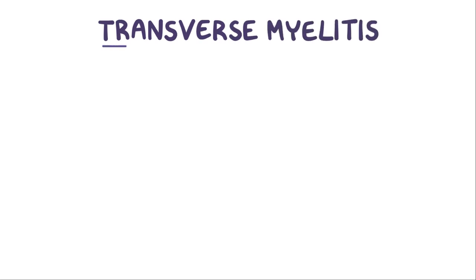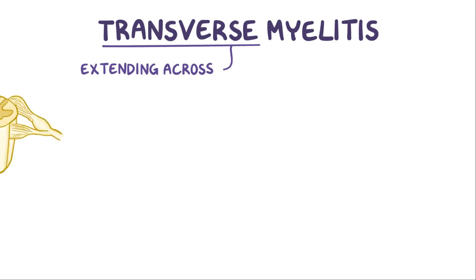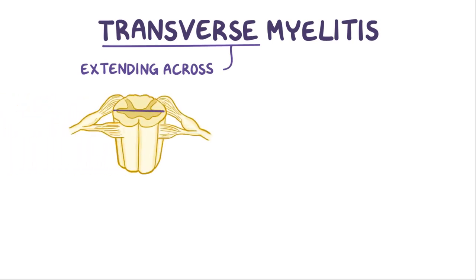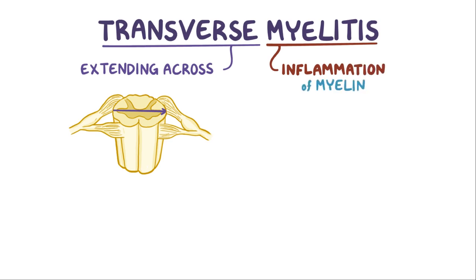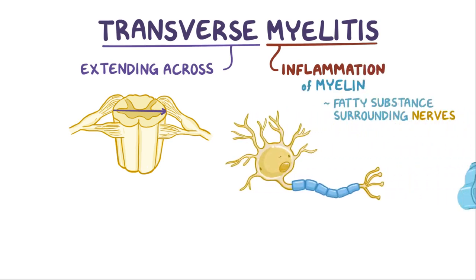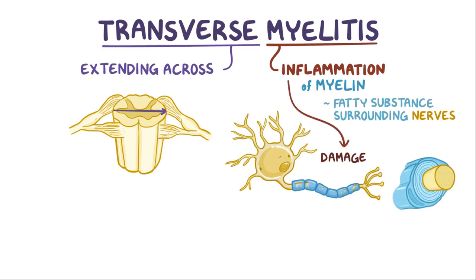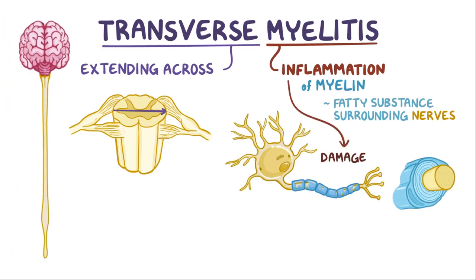The name of the disorder, transverse myelitis, can be broken down. Transverse means extending completely across something — in this case it refers to going across the spinal cord — and myelitis means inflammation of myelin, which is a fatty substance surrounding nerves. So in transverse myelitis, there's inflammation that damages the myelin as well as the rest of the neuron across a section of the spinal cord.